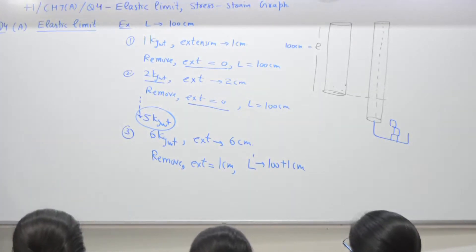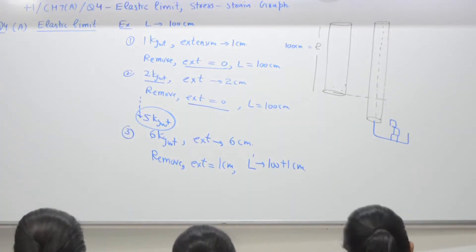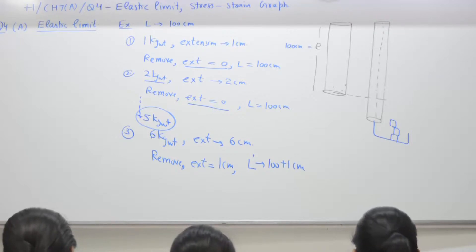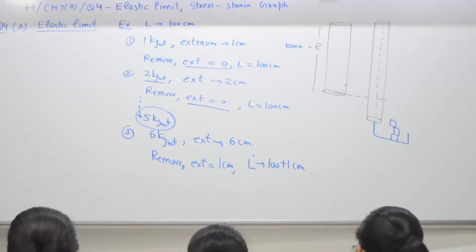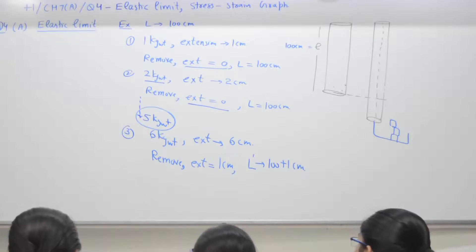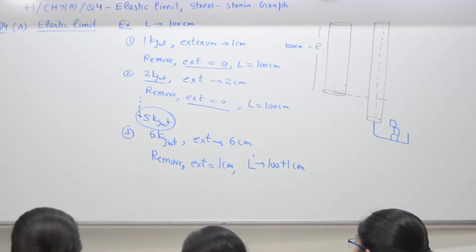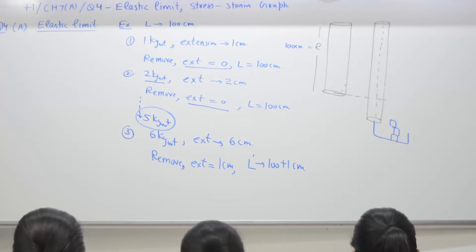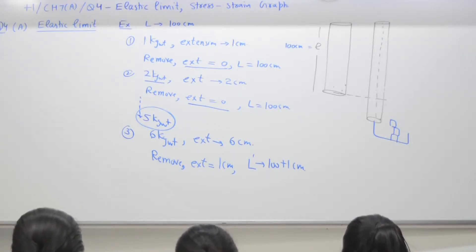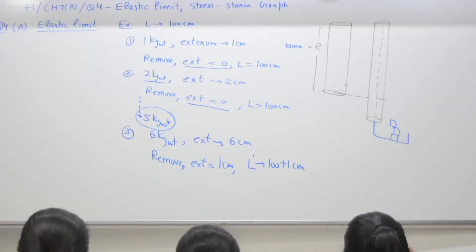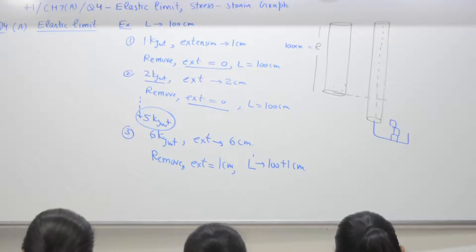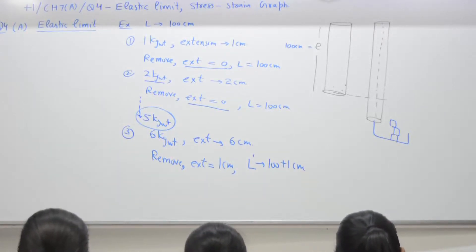So, elastic limit — definition: elastic limit is the upper limit of deforming force. A deforming force is a force which tries to change the shape. Up to this limit, if a deforming force is removed, the body regains its original form completely. Beyond which, if a deforming force is increased, the body loses its property of elasticity and gets permanently deformed.